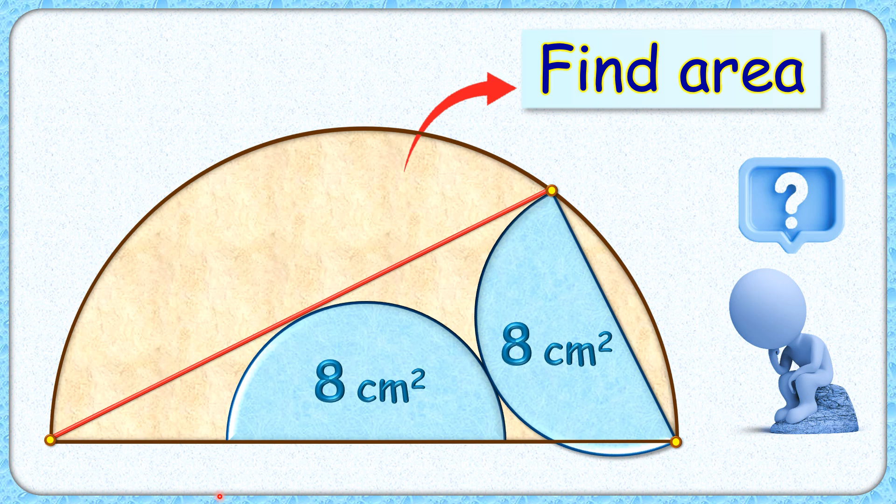Welcome everyone. This interesting question: we are given 3 semicircles, of which 2 semicircles are identical with area 8 cm². This red line segment is tangent to both semicircles. The exciting part is, with this given data, we have to find the area of this brown semicircle.